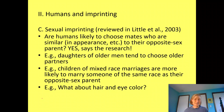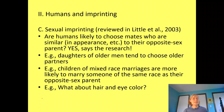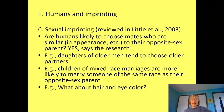Now let's look at sexual imprinting. Is there any evidence that humans sexually imprint — that we are likely to choose mates who are similar to our opposite-sex parents, like those male zebra finches? The research says yes, and that's kind of scary.